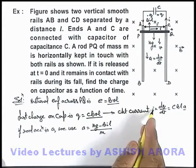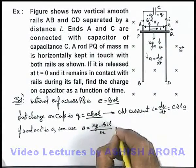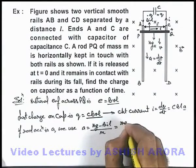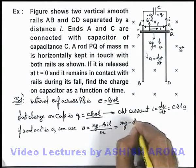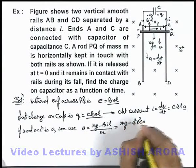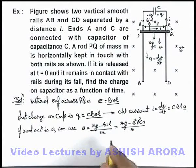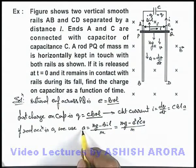And in this situation, if I substitute the value of current as CBla, this will be mg minus B squared l squared Ca by m. And if this term is taken on the left hand side.